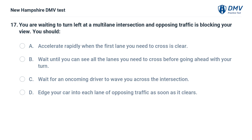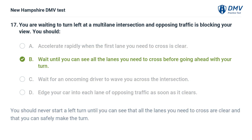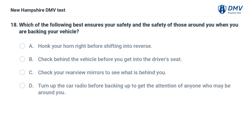You are waiting to turn left at a multi-lane intersection and opposing traffic is blocking your view. You should: A) accelerate rapidly when the first lane you need to cross is clear, B) wait until you can see all the lanes you need to cross before going ahead with your turn, C) wait for an oncoming driver to wave you across, D) edge your car into each lane of opposing traffic as soon as it clears. The answer is B. You should never start a left turn until you can see that all the lanes you need to cross are clear and that you can safely make the turn.